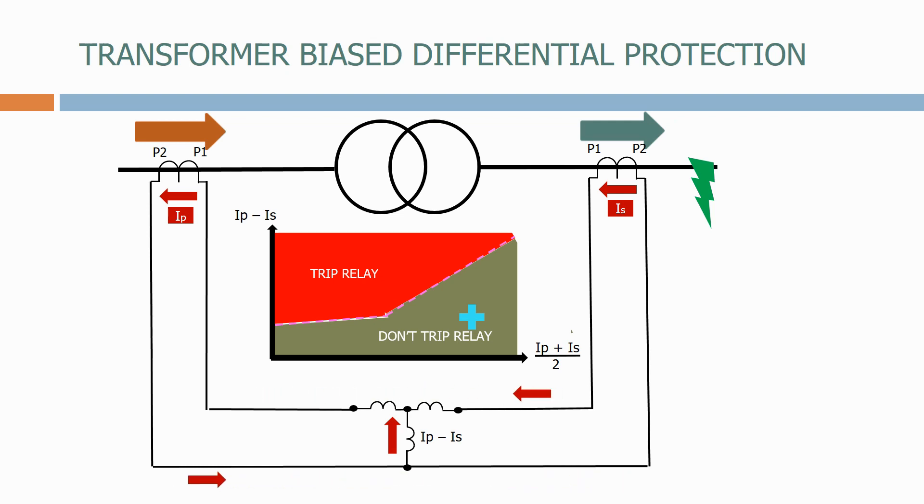Therefore, by biasing the relay, we have made the differential relay less susceptible to through faults outside the protection zone.